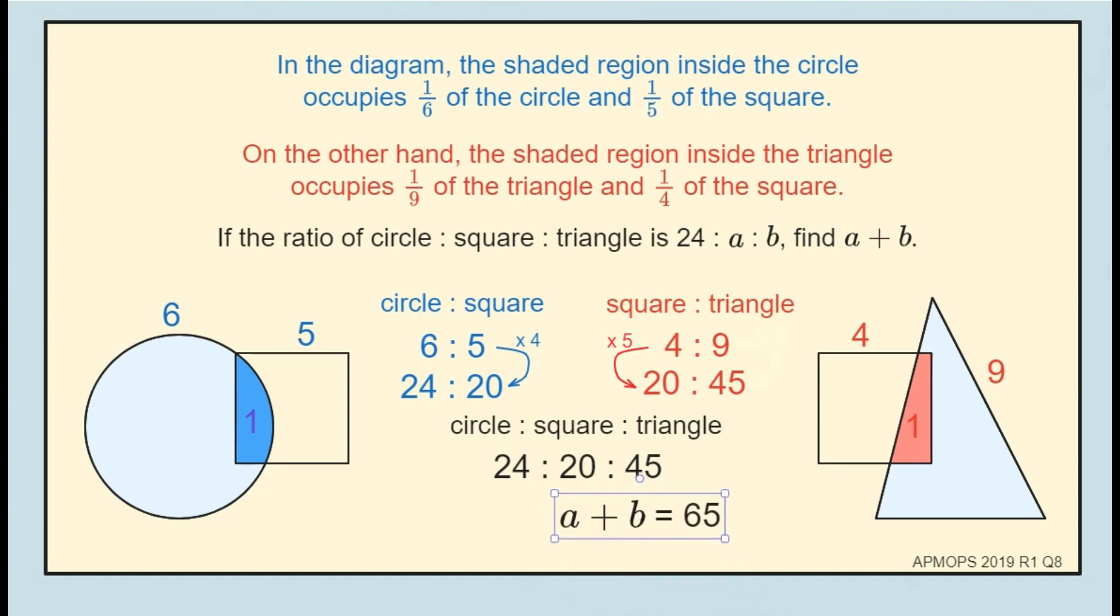Therefore, A plus B is 65. And that is the answer.